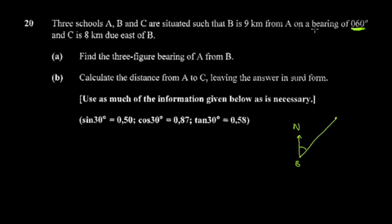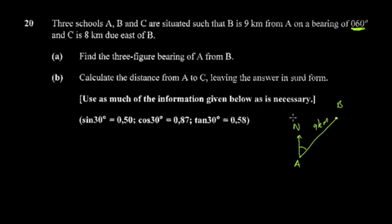I actually made a mistake — when they say 'from,' that's where you put the reference point. They say 'from A,' so the bearing is taken from A, meaning B is the other point. You're also told C is due east of B, so from B you go in the eastward direction to place C.